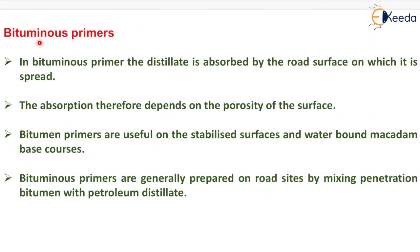Next is bituminous primers. In bituminous primer, the distillate is absorbed by the road surface on which it is spread. The absorption therefore depends on the porosity of the surface. Bitumen primers are useful on stabilized surfaces and water-bound macadam base courses. Bituminous primers are generally prepared on road sites by mixing penetration bitumen with petroleum distillate.